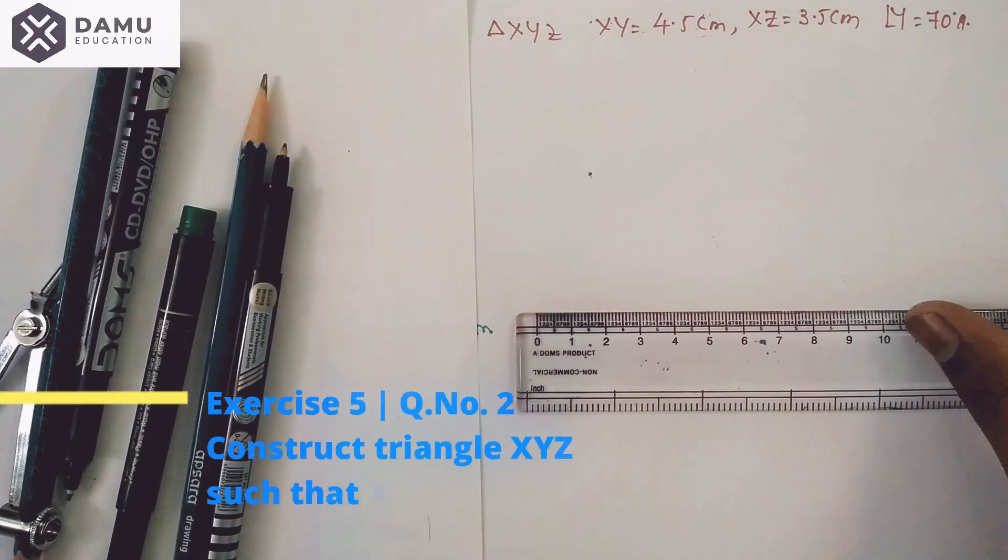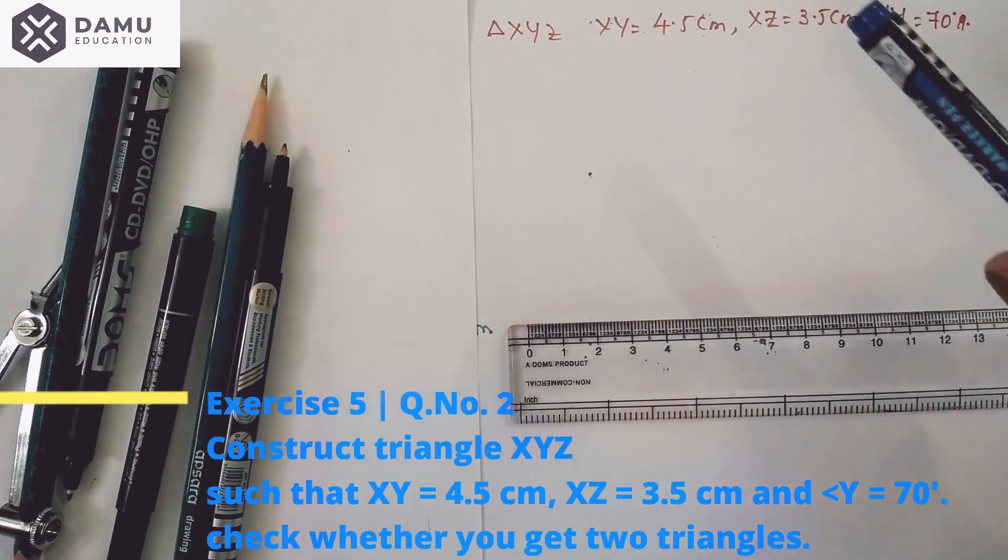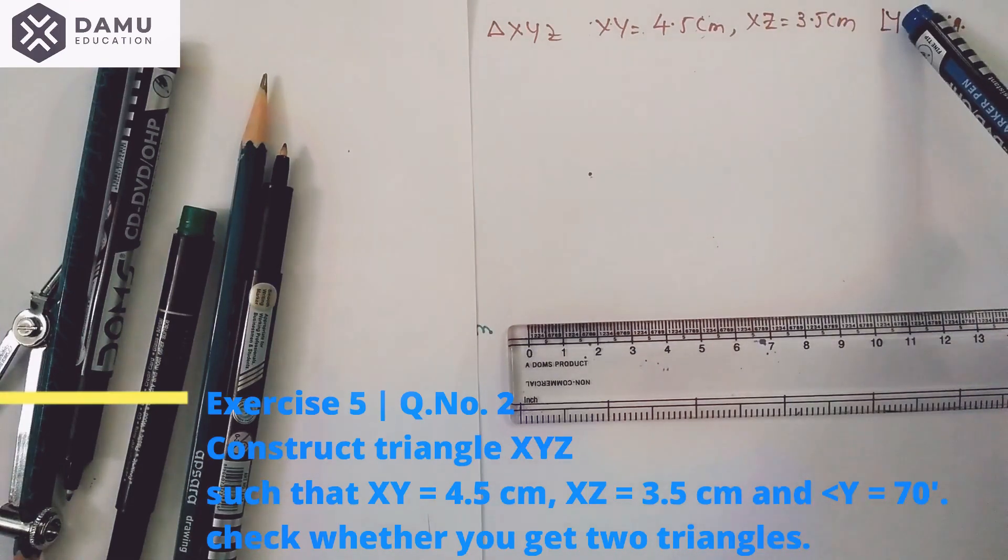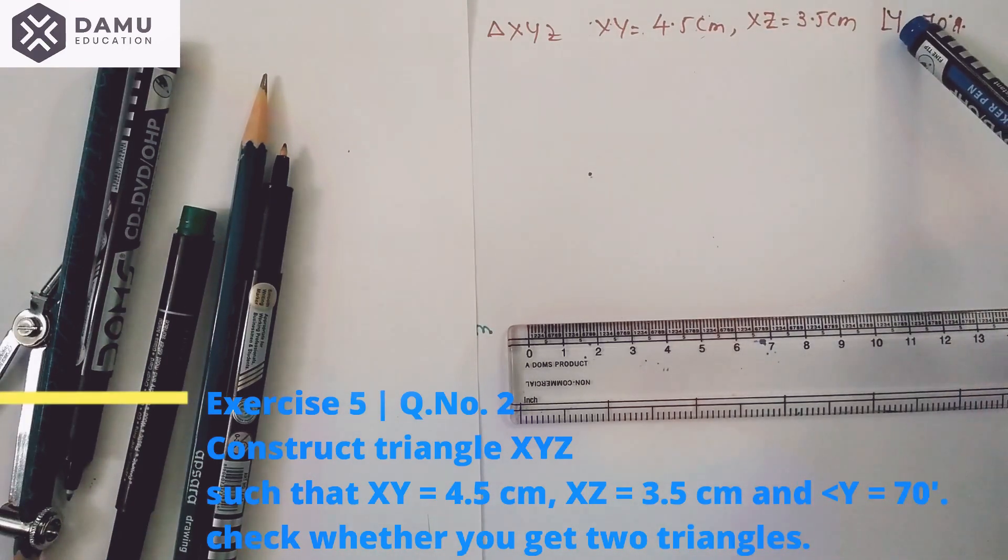Hello viewers. In this module, we are going to discuss how to construct triangle XYZ where XY equals 4.5 cm, XZ equals 3.5 cm, and angle Y equals 30 degrees. We need to draw vertex Y first, which is presented in line segment XY.